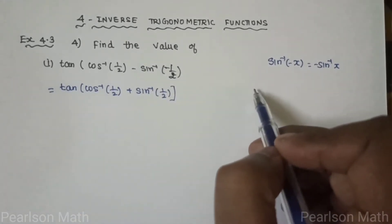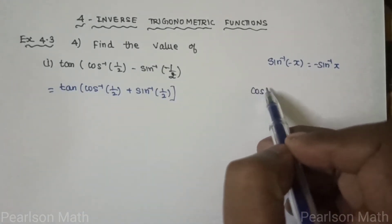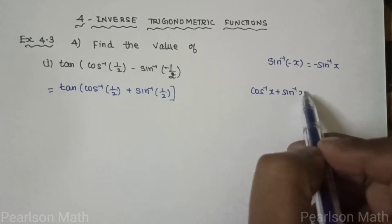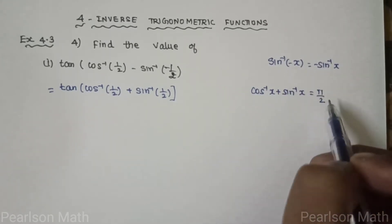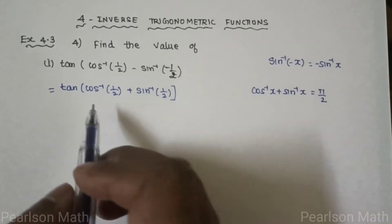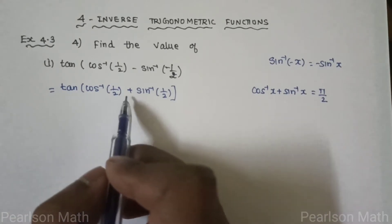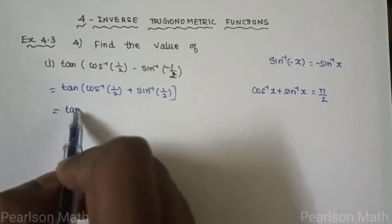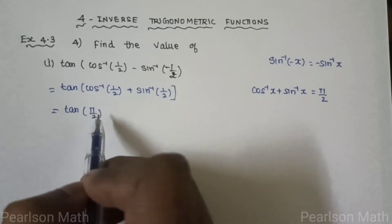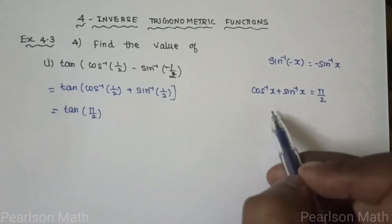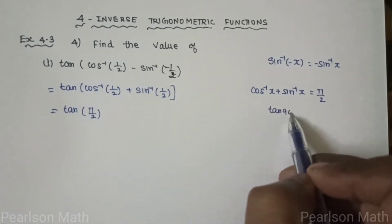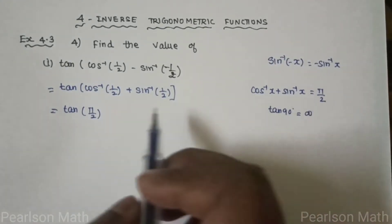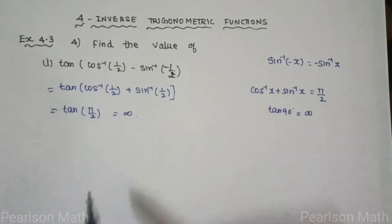Apply the formula: cos inverse of x plus sin inverse of x equals pi by 2, where x equals 1/2. So we get tan of pi by 2, which is tan of 90 degrees. The value of tan 90 degrees is infinity, which is undefined. Therefore the answer is infinity.